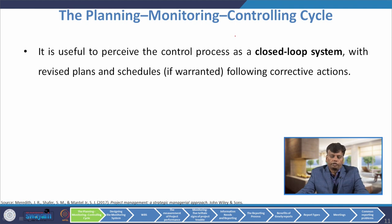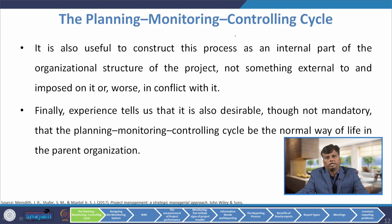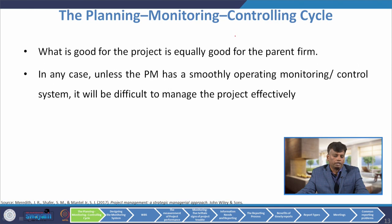It is useful to pursue the control process as a closed-loop system with revised plans and schedules following corrective actions. It is also useful to construct this process as an internal part of the organizational structure — the Planning, Monitoring and Controlling Cycle should not be something external or imposed on it, or in conflict with it. Experience tells us it is also desirable that the planning, monitoring and controlling cycle be the normal way of life in the parent organization. What is good for the project is equally good for the parent firm.